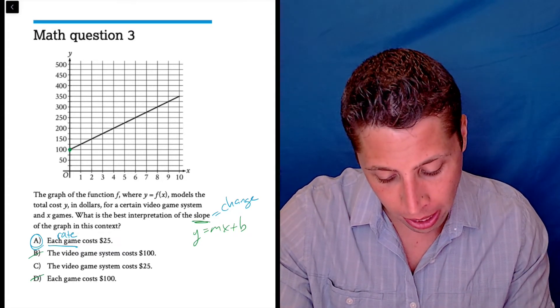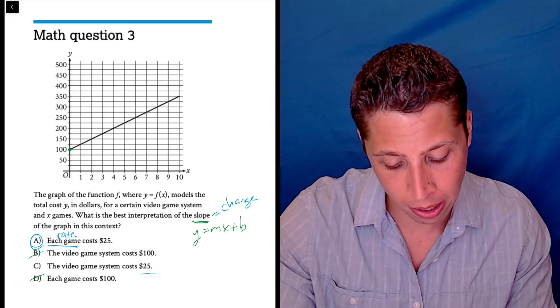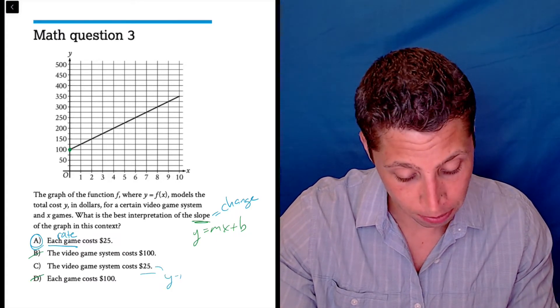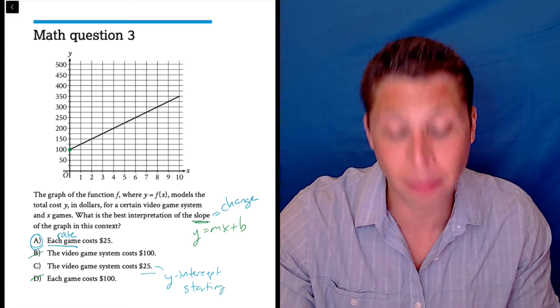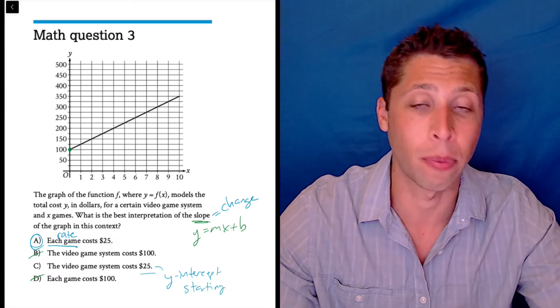Now in choice C, this is actually making the 25 sound like a y-intercept, a starting point. That's what a y-intercept is - a starting value. It's not something that changes. It's just something constant that we have at zero.